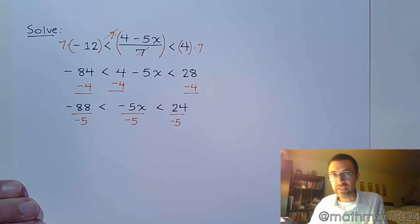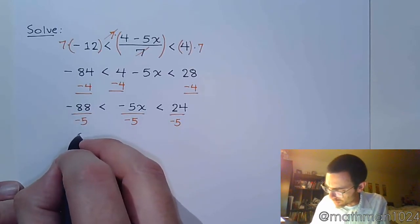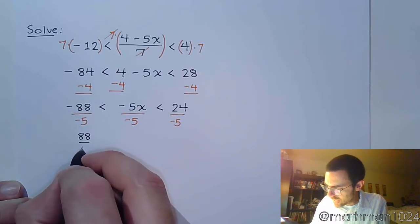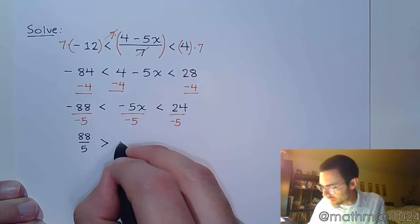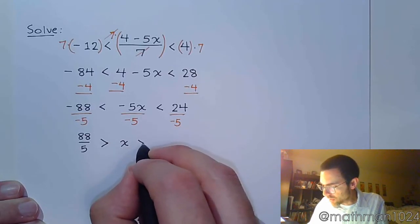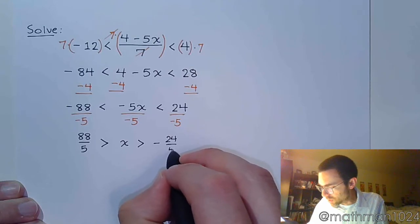Now, we're dividing by negative, so that means those inequality symbols are going to change. They're going to flip around. Now, 88 and 5 don't reduce, but you do have negative over negative, so that's a positive. Negative 88 over 5. So, this now becomes greater than x, which is greater than negative 24 over 5.